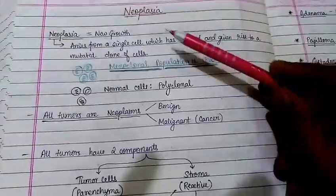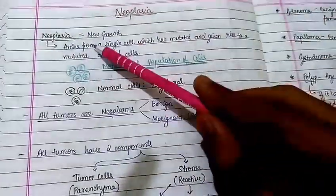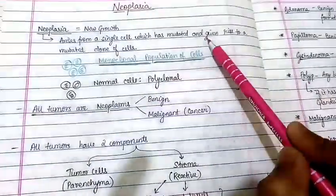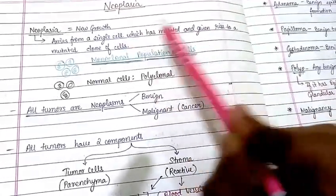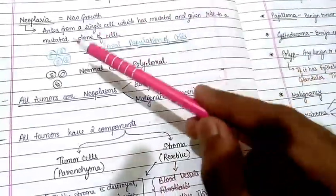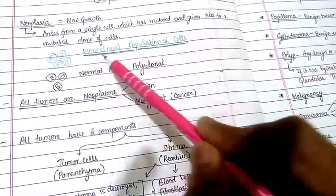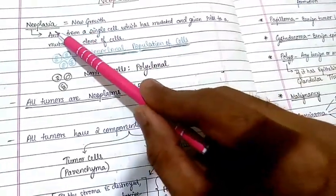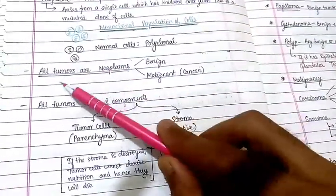In this video we are going to start with neoplasia. 'Neo' means new and 'plasia' means growth, so neoplasia is new growth. The cells arise from a single mutated cell, giving rise to a mutated clone of cells. This population is known as a monoclonal population of cells — if cells are arising from the same mutated cell, that is a monoclonal population. Normal cells are polyclonal, but neoplasia cells are monoclonal.